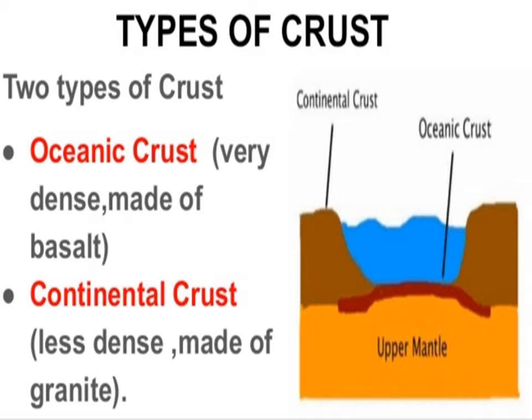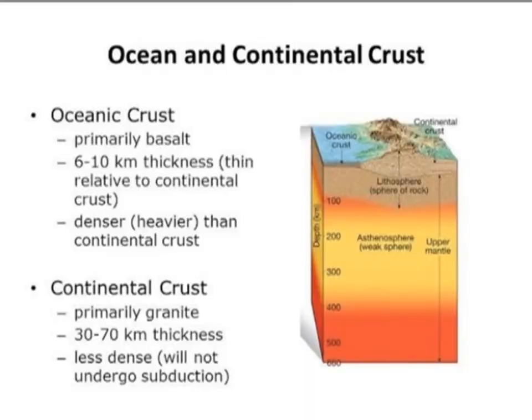As shown in this diagram, there is a difference between oceanic crust and continental crust. Oceanic crust is primarily made up of basalt, while continental crust is primarily made up of granite.